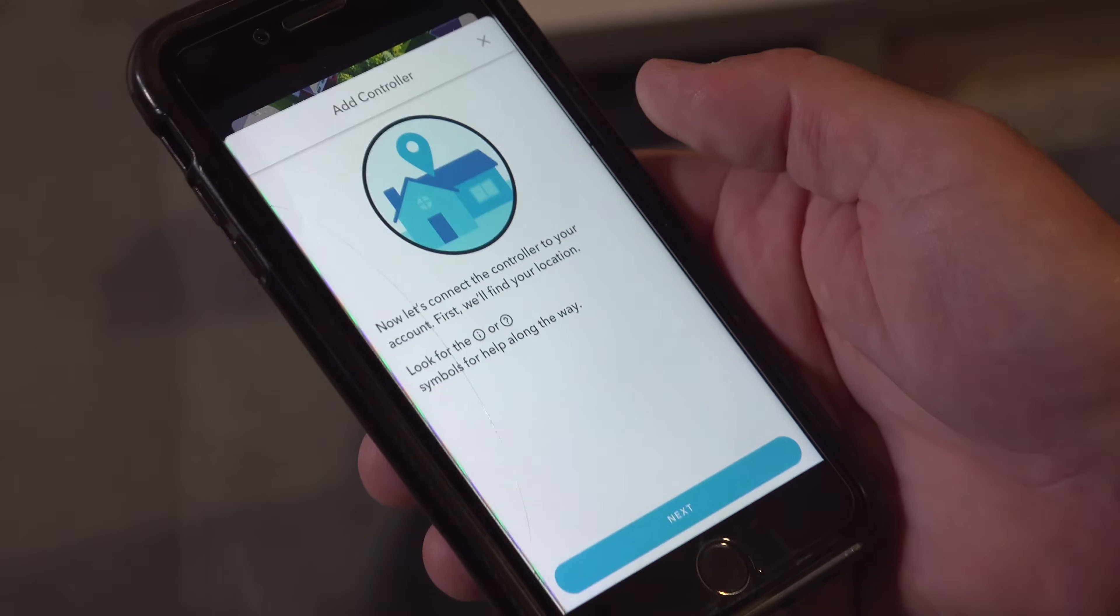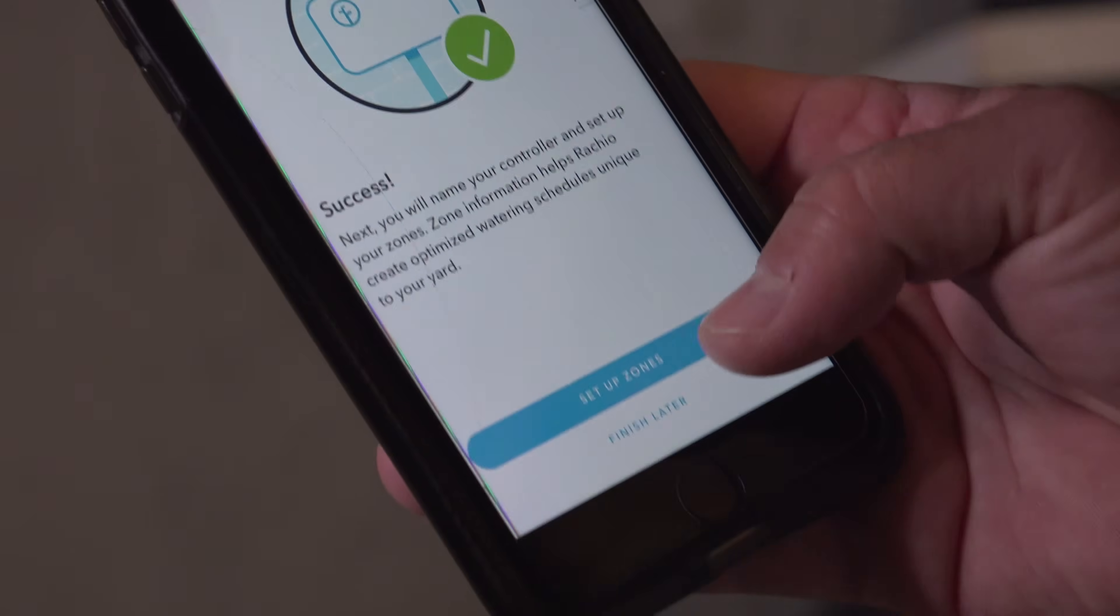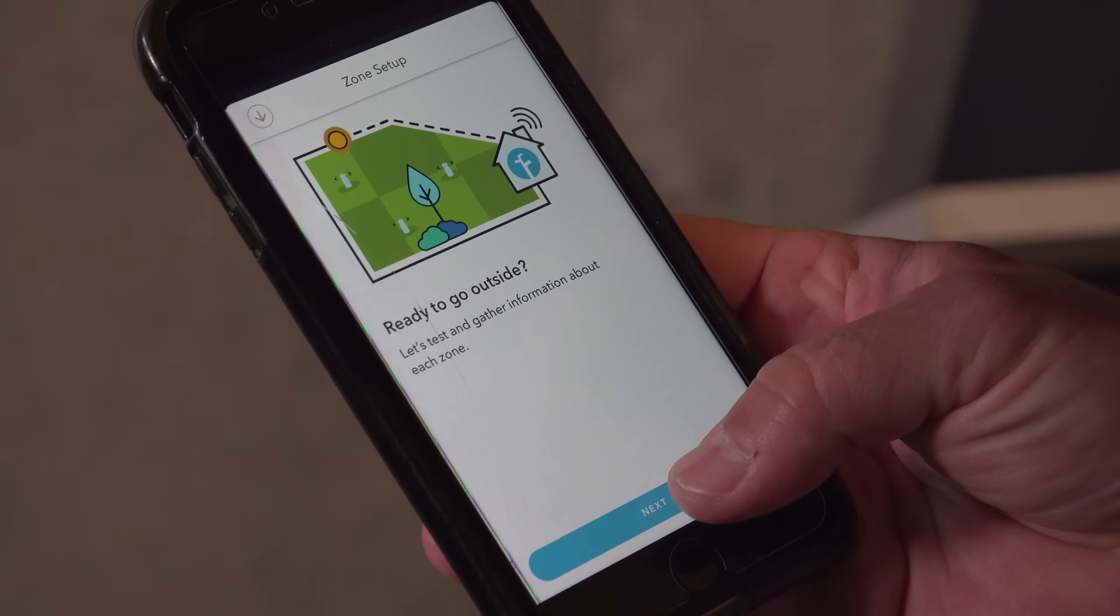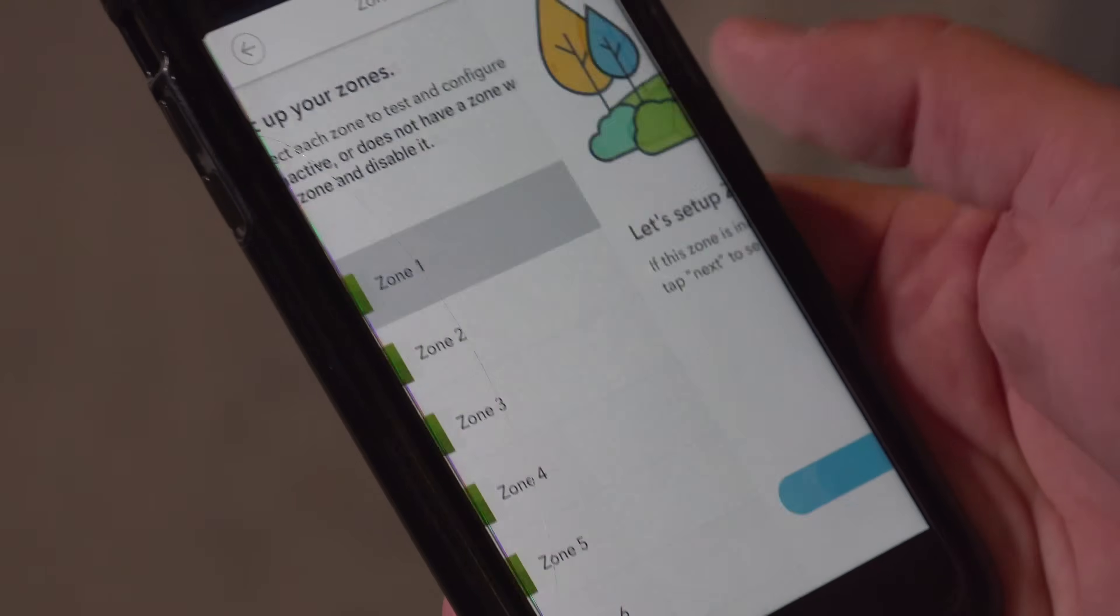You just pick add controller, you take a photo of your serial number and it sets itself up. The next steps are even better because you want to go outside and it's going to walk you through testing each one of your zones and this does a couple of things.